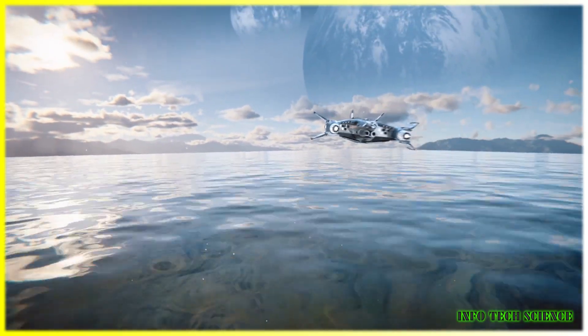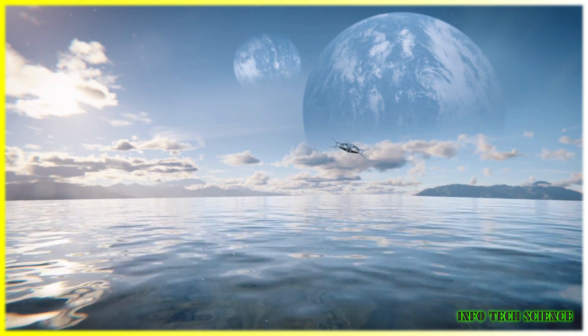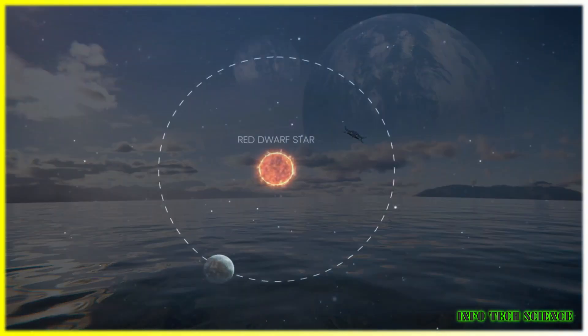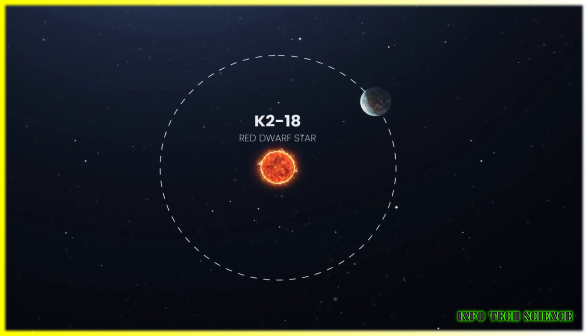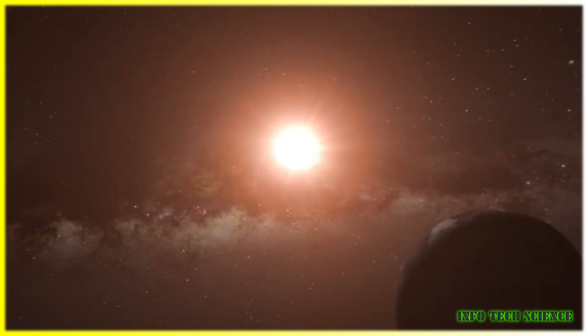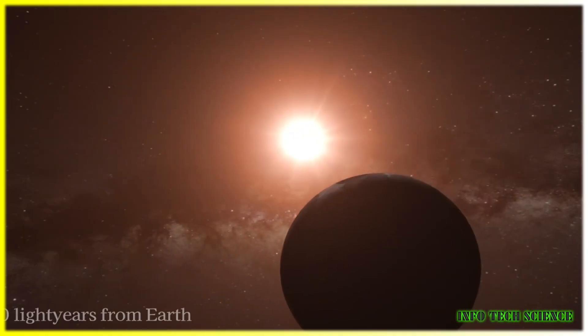What makes the planet even more interesting is that it is not Earth-like. K2-18b is nearly nine times the size of Earth.